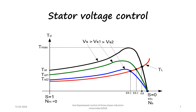The torque-speed characteristics for stator voltage control are shown here. As the voltage increases, the torque developed by the motor increases. For the supply voltage VS, the torque-speed characteristic is shown by the black line. When the voltage is decreased, the characteristic shifts to the green line, and when decreased further, to the blue line. The speed at which maximum torque occurs remains more or less the same — the change in supply voltage does not affect the point at which maximum torque occurs.